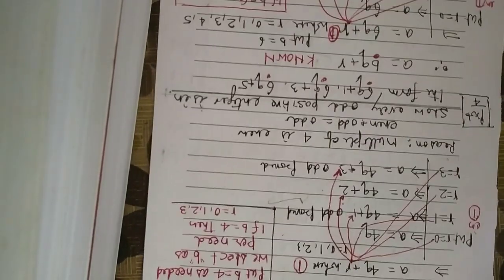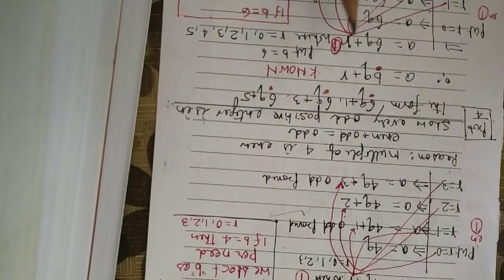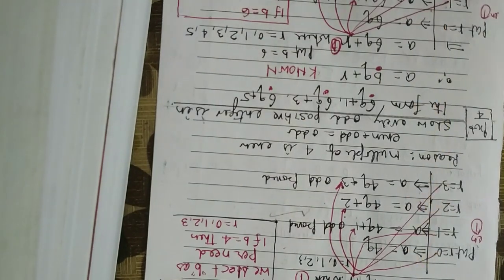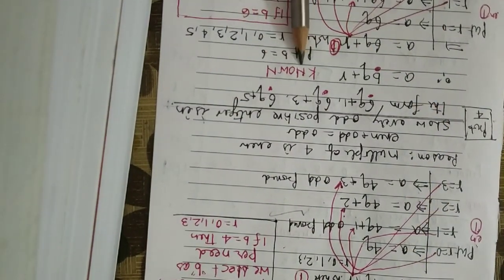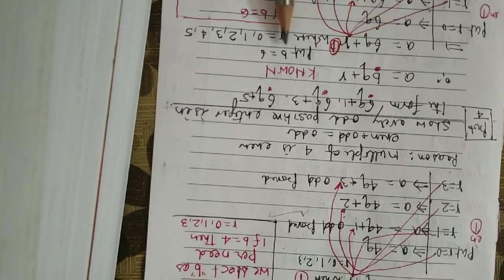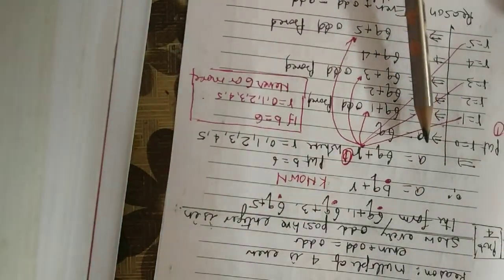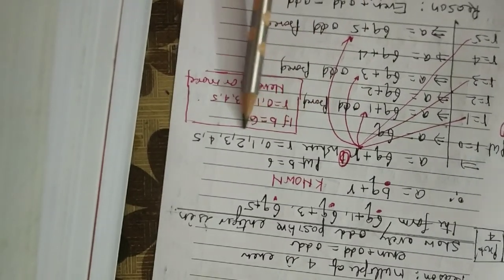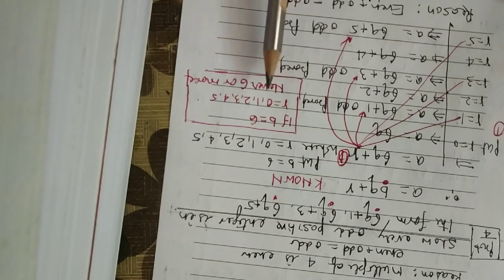Problem 4: Show that every odd positive integer is in the form 6q + 1, 6q + 3, or 6q + 5. Again using A = BQ + R, put B = 6. Then A = 6q + r, where r = 0, 1, 2, 3, 4, or 5 — as you already know when B is 6, r runs from 0 to 5.